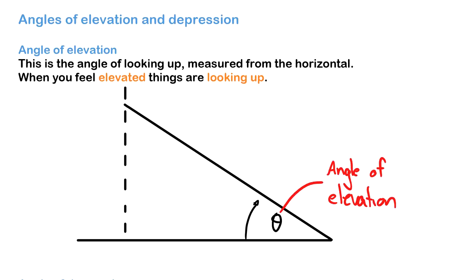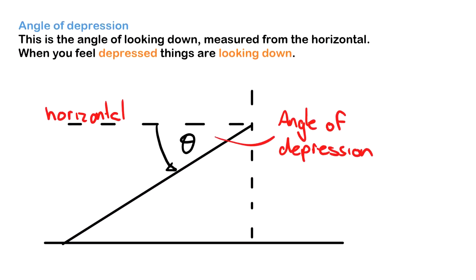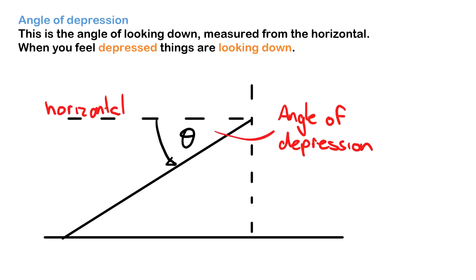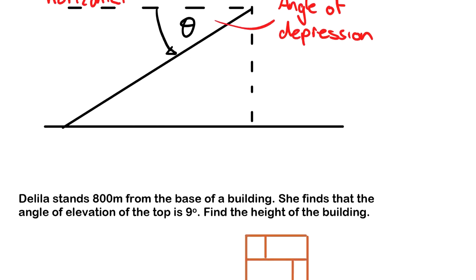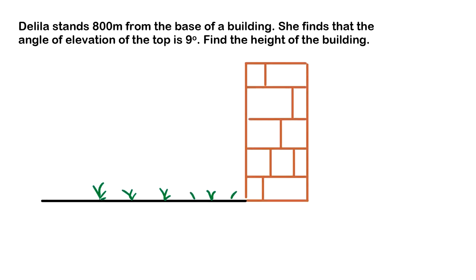Next we're looking at your angle of depression. This is the angle looking down, measured from the horizontal. When you feel depressed, things are looking down, hence an angle of depression is looking down at something. We're going to cover some questions here, and usually these types of questions are word problems.